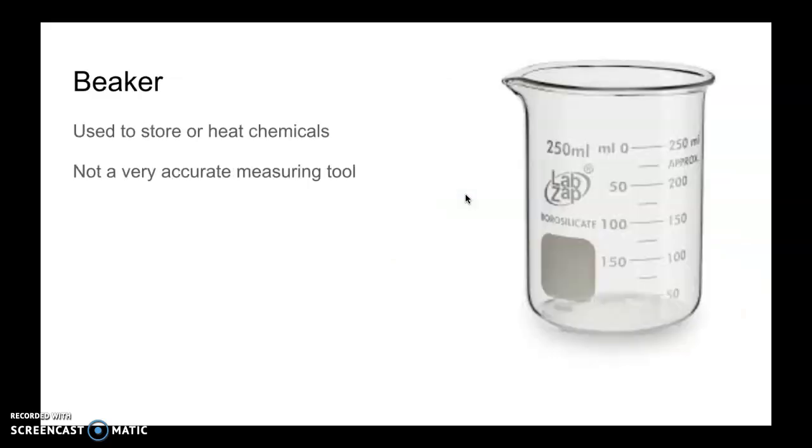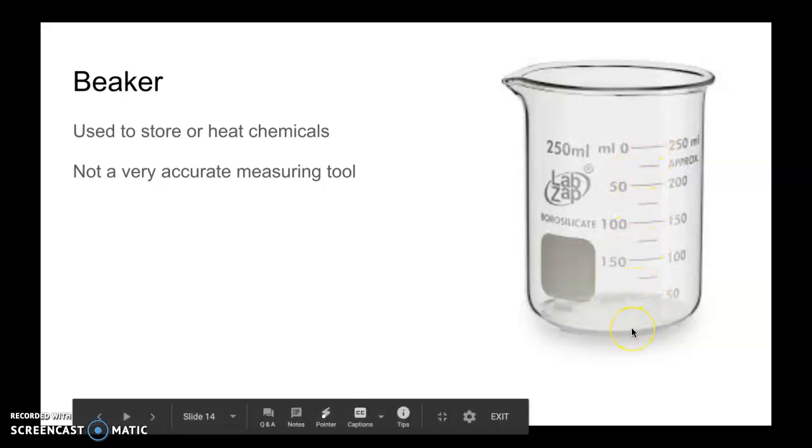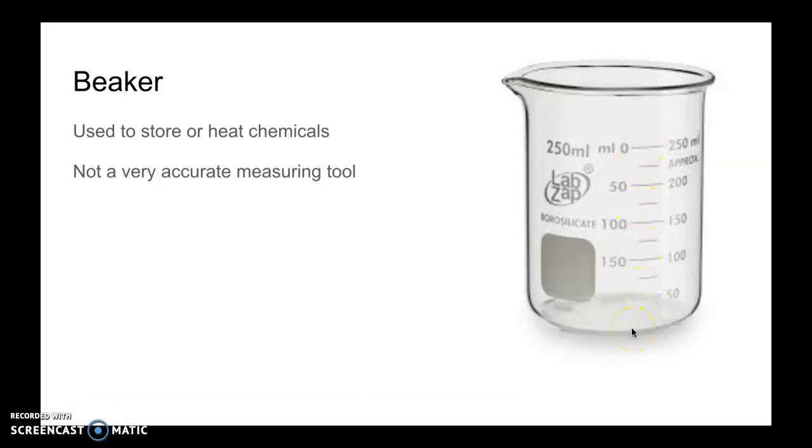This is a beaker. These are usually made of glass. These are not very accurate when it comes to measuring. Notice it doesn't have as many graduations or markings as the graduated cylinder. That's why it's not as accurate. This would be used to store liquids or chemicals that you would use later in an investigation or possibly need to heat on a hot plate.